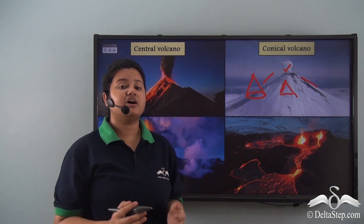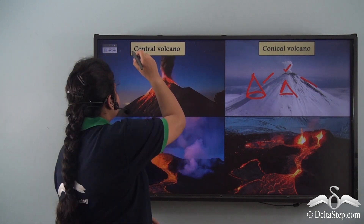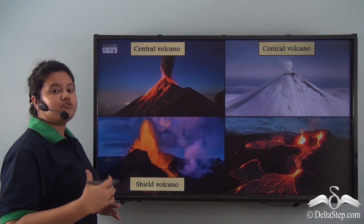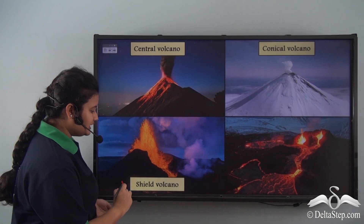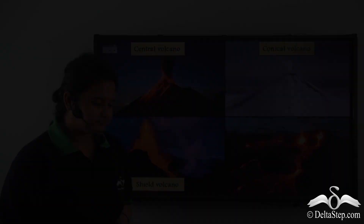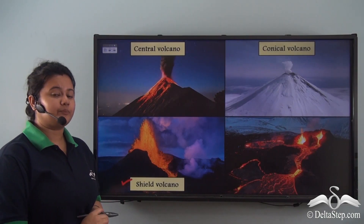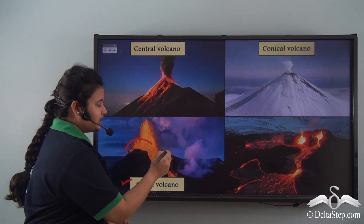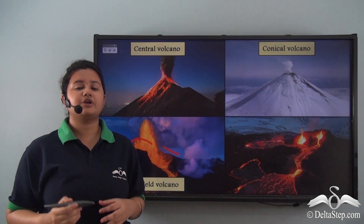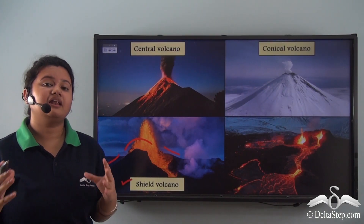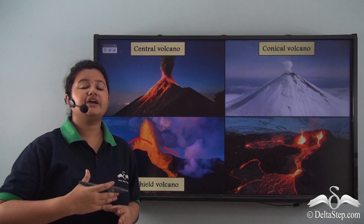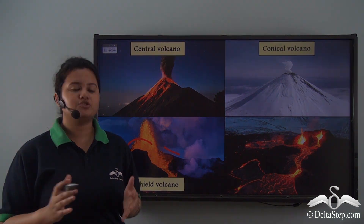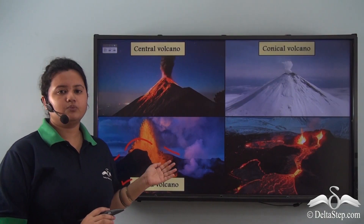If lava is less viscous and more fluid, it spreads over a vast region and a shield volcano is formed. A shield volcano has a dome shape and gentle slopes because the fluid lava flows and spreads widely, forming that broad, gently sloping structure.